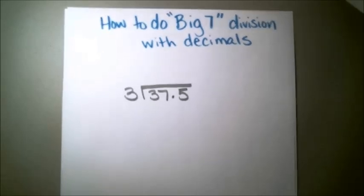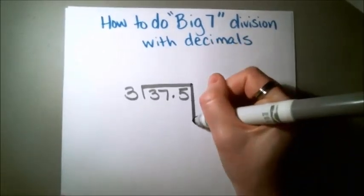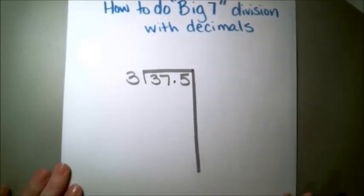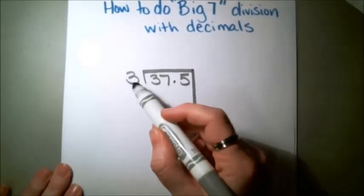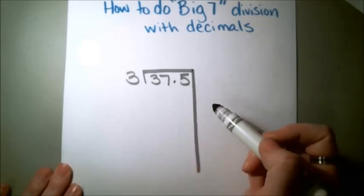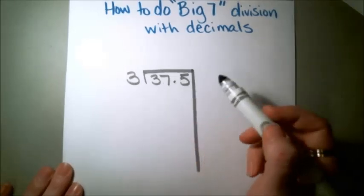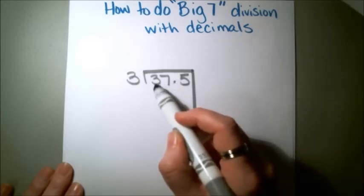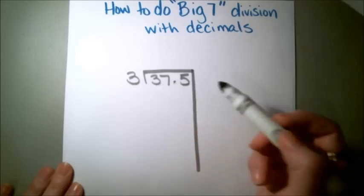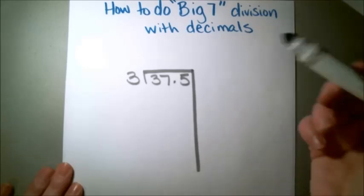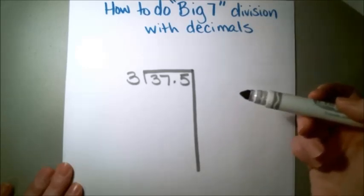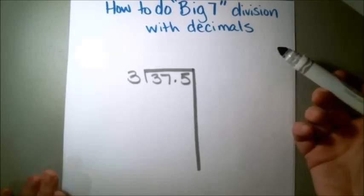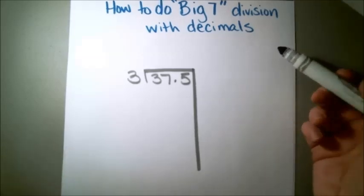So let's go ahead and get started with this problem. I'm going to draw my line down there and start figuring out how many of these 3's I can take out of this larger number. I'm actually just going to ignore that this decimal is right here for right now and treat this number as 375. Because when I put my decimal in later on, once I'm done with my division, then it will make the place value correct.